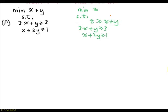The extra constraint in the green problem is quite special. It involves the new variable and the objective function of the original problem. The claim is: if we have an optimal solution to this green problem, then we also have an optimal solution for the problem p.